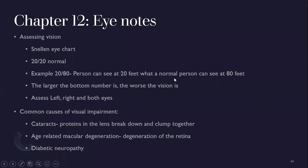The Snellen eye chart uses letters or E's facing different directions — 20/20 is normal. 20/80 means the person can see at 20 feet what a normal person sees at 80 feet. The larger the bottom number, the worse the vision. Test left, right, and both eyes. Make sure patients wear their glasses during the test. 20/100 is considered legally blind in the United States. Common causes of visual impairment: cataracts (protein breakdown in the lens), age-related macular degeneration (retinal degradation), and diabetic retinopathy.